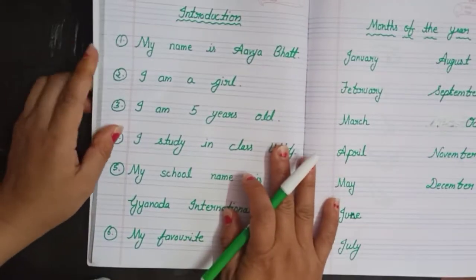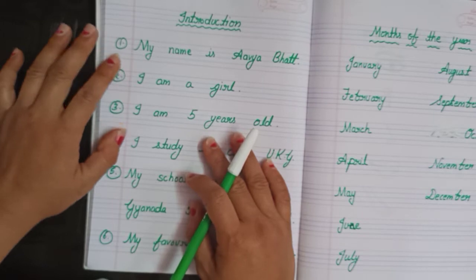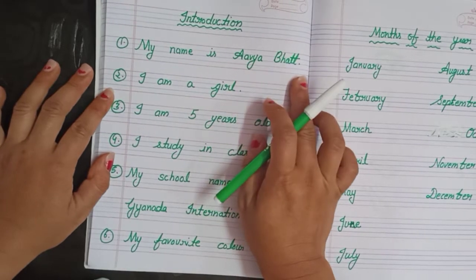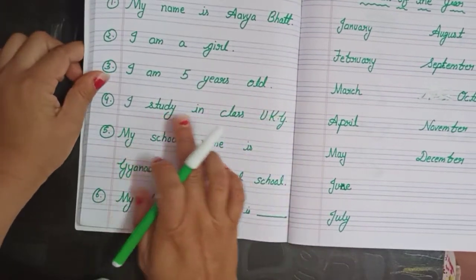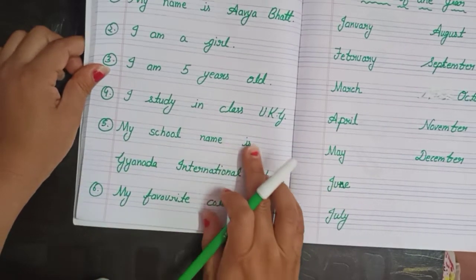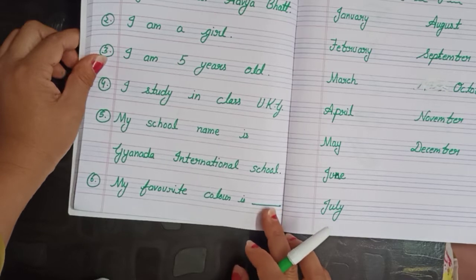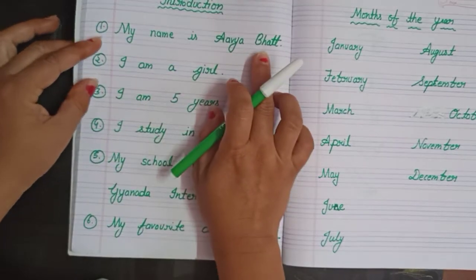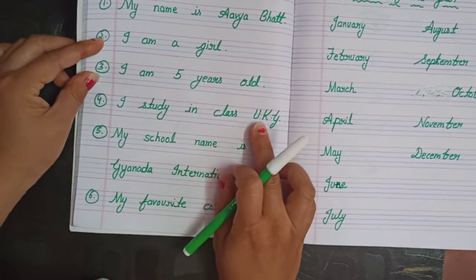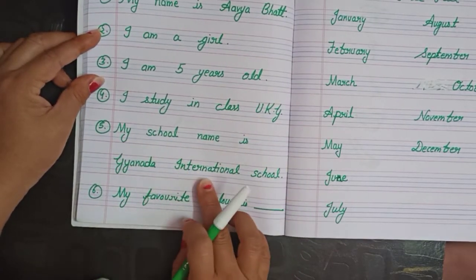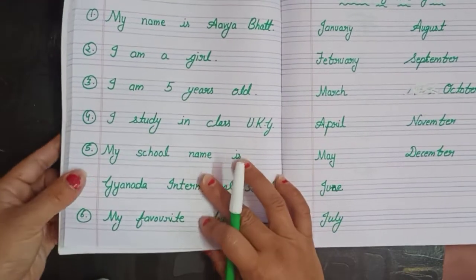Firstly we will revise introduction. You have learned very well, but one more time we will revise. My name is Abyabhat. I am a girl. I am five years old. I study in class UKG. My school name is Gyanat International School. My favorite color is — whatever your color which you like, you can write it here. My favorite color is red, blue, black. This is your introduction. You have to learn it properly.